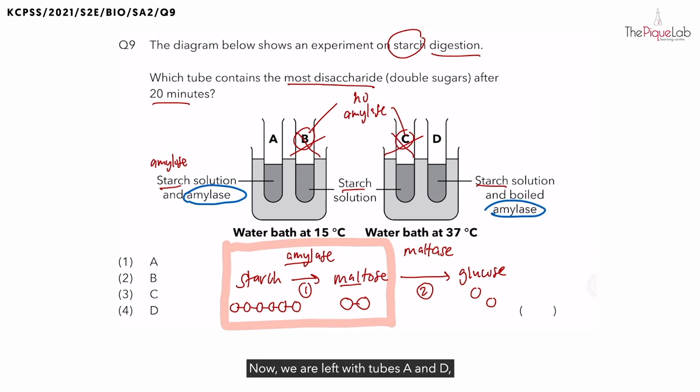Now we are left with tubes A and D which both contains amylase. Before we analyze these two tubes, let's recall another important information about enzymes. So enzymes have an optimum temperature and pH. What does that mean? It means that they have a pH and temperature that they work best in. And if amylase works best, do you expect more or less maltose to form? You would expect more maltose to form.